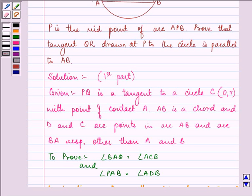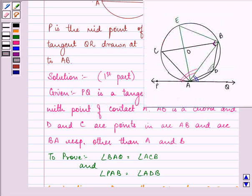Now here we are given that PQ is a tangent to the circle with center O and radius R with point of contact A. AB is a chord and D and C are points on the arc AB and arc BA respectively other than A and B. We need to prove that angle BAQ is equal to angle ACB and angle PAB is equal to angle ADB.